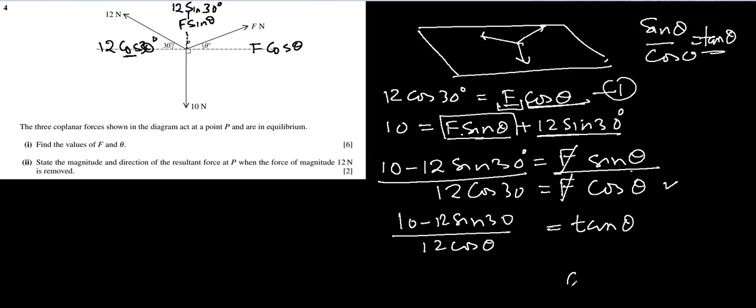And that was the purpose. This becomes 10 minus 12 sin 30 over 12 cos 30. So if I want to find theta now, it will become tan inverse 10 minus 12 cos 30 over 12 cos 30. Put this in a calculator and you will get 21.05 degrees. That is the angle.